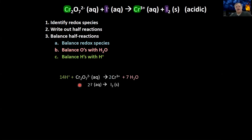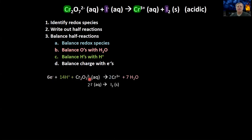Now that we've added oxygens in the form of water, we've also added a bunch of hydrogens, so we balance those hydrogens with protons — specifically 14 protons. The last thing to do is balance charge with electrons. On the left we have 14 times plus one plus negative two, which is 12 plus. On the right we just have 2 times 3 plus, which is 6 plus. To get from 12 plus to 6 plus, we add 6 electrons on the left. Down on the bottom reaction, we have 2 minus on the left and no charge on the right, so we add 2 electrons on the right.